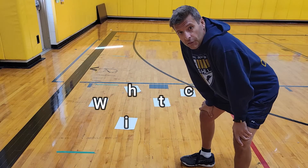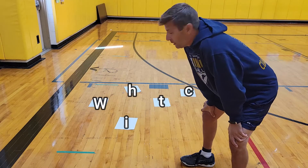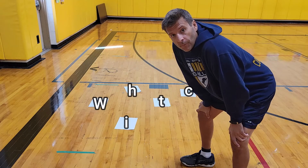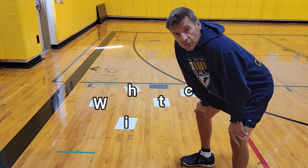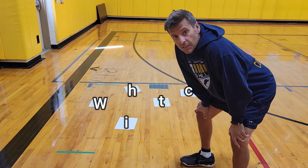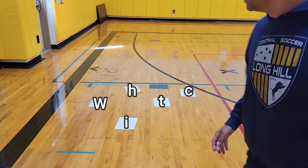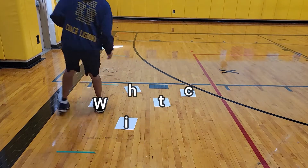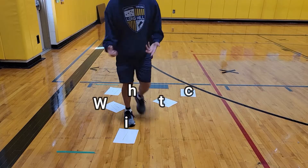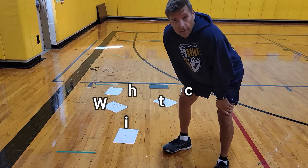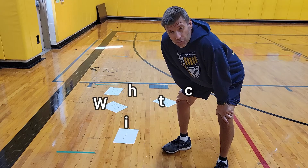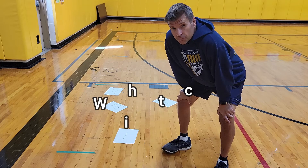You can either do this in a timed fashion and see how quickly you can step on the letters to spell out 'witch', or you can do it from a team perspective and have it like a relay where one at a time they have to step on each letter, go back, and tag their teammate. You can spread it out as much as you want in the classroom or as much as you want in the gym.